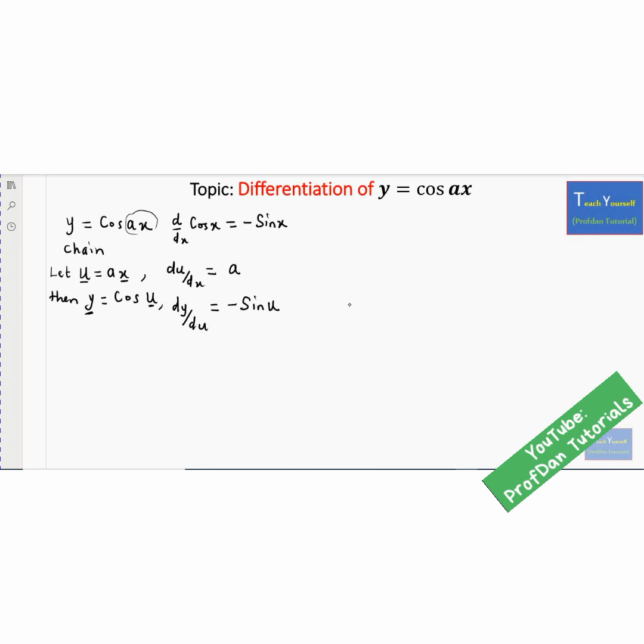And according to chain rule, you have to multiply these two together. That is your du/dx multiplied by dy/du, which in turn gives you dy/dx. And that's all we are looking for. So I have my du/dx, which is a, multiplying dy/du, which is negative sin u. And finally we can bring the negative to the front, sin u. We replace it with what it is, which is ax. So you have negative a sin ax.